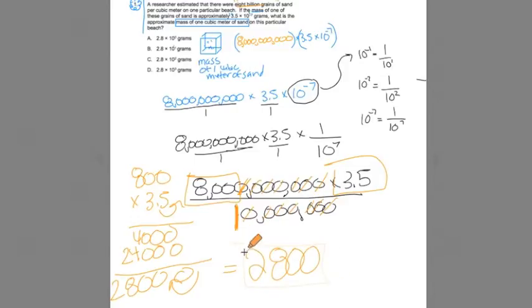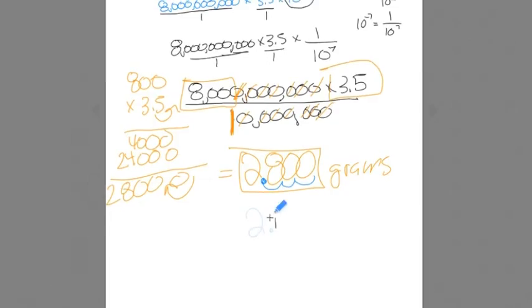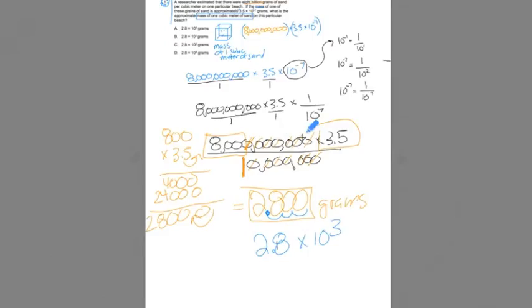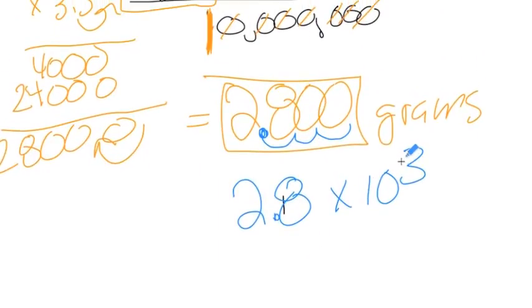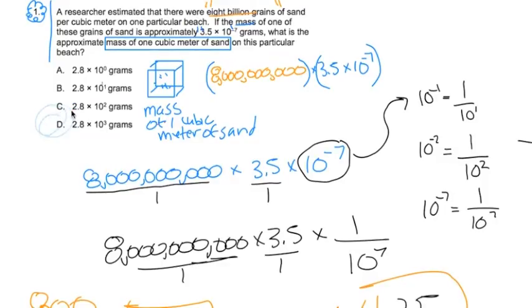2,800 grams per cubic meter of sand. Now the answer has to be expressed in scientific notation form. So it means I'm going to have to drop my decimal here and move it over 1, 2, 3 spaces. And rewrite this as 2.8 times 10 to the third power. Because we moved it over 3 spaces. And we look back at the answer choices here. You have 2.8 times 10 to the third. Well, guess what? That's D. D is equal to 2,800 grams.